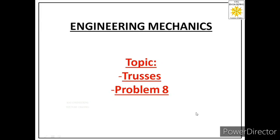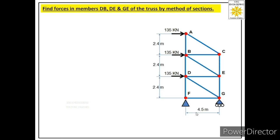Welcome students. Today we will solve the eighth problem on trusses and we will solve this problem through the method of sections. We are given one truss and we are asked to find forces in members DB, DE, and GE of this truss by method of sections. We know that if we have to solve any problem through method of sections, then the first step is that we should identify the supports given in the truss.